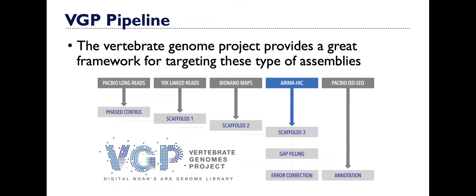The vertebrate genome project provides a great framework that we're trying to follow for targeting these types of assemblies. It includes things like generating PacBio long reads, Illumina reads, in this case 10x genomics linked reads, bio nano maps, Hi-C data, and then RNA-seq data, in this case coming from PacBio isoseq. Ideally we'd like to follow this as closely as possible so that we can also generate very high quality assemblies. But there's some things we have to consider where they're using standard approaches and we're having to use a lot of low input approaches in our pipelines.